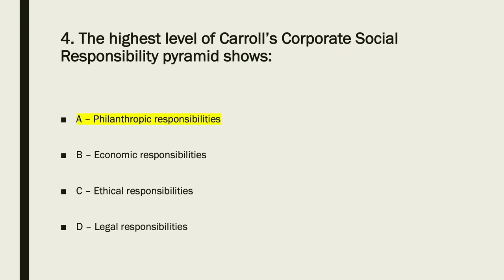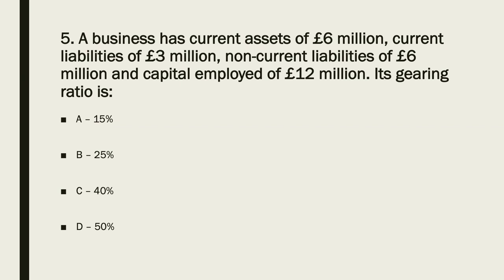Let's move on to the final question. When calculating the gearing ratio, the formula is non-current — so long-term liabilities — divided by capital employed, expressed as a percentage. Six million divided by 12 million times by 100 is 50%. So the answer to number five is D.